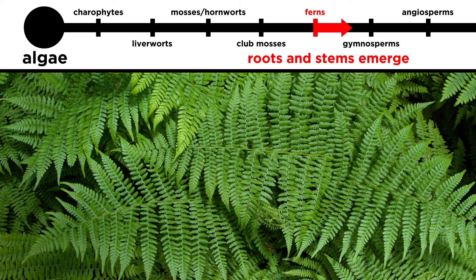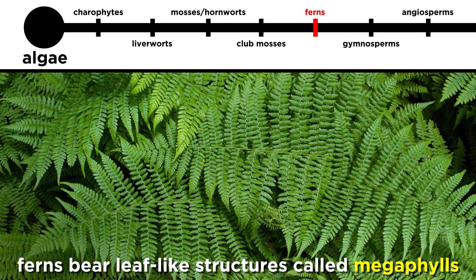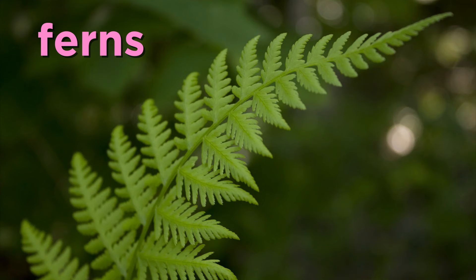Ferns are more advanced vascular plants than those we've discussed previously, namely because they are the first to have true roots and stems. Fern stems bear leaf-like structures called megaphils, which are essentially larger versions of the microphils grown by lycophytes.